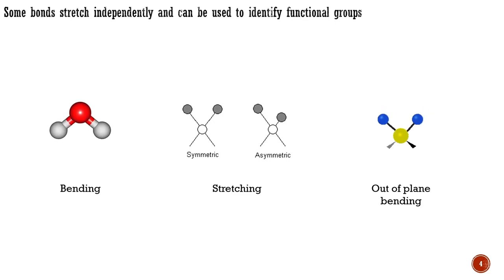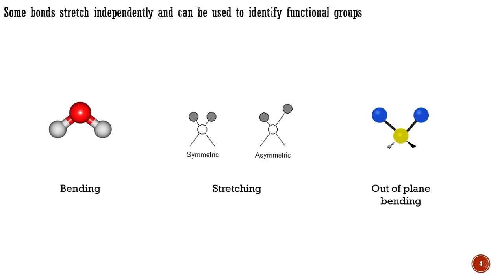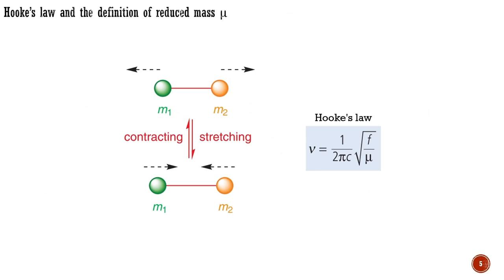Hooke's law describes the movement of two masses attached to a spring. It takes the form where ν is the frequency, f is the force constant, μ is the reduced mass, and c is a constant needed to make the units work. Hooke's law shows that the frequency of the vibration is proportional to the square root of the force constant or bond strength, and inversely proportional to the square root of the reduced mass — that is, the product of the masses of the two atoms forming the bond divided by their sum. Infrared spectra are simple absorption spectra. The sample is dissolved in a solvent or deposited on the surface of an inert sodium chloride plate and exposed to infrared radiation. The wavelengths are scanned across the spectrum and the amount of infrared energy able to pass through the sample is plotted against the wavelength of the radiation.